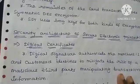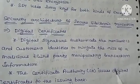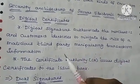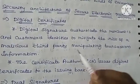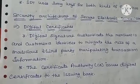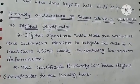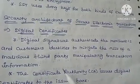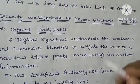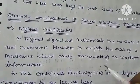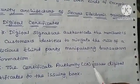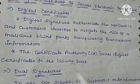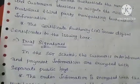The secure architecture of SET includes digital certificates. A digital certificate with a digital signature authenticates merchants and customers to reduce the risk of a malicious third party manipulating transaction information. No one can hide or steal the data — no third party is involved. Digital certificates are issued by a certificate authority to the issuing bank.